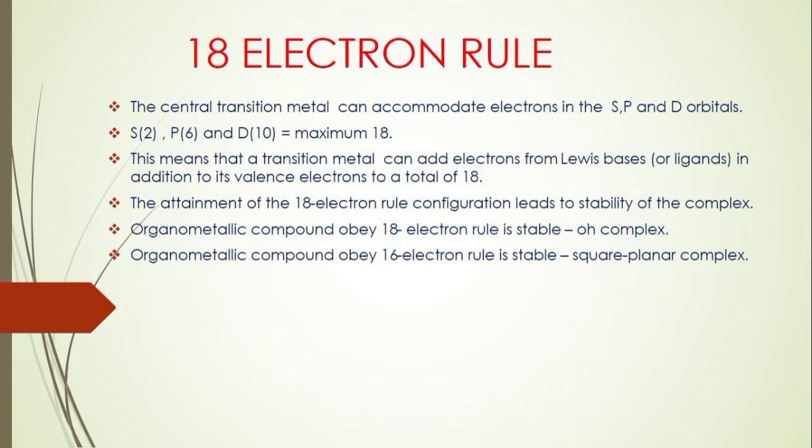The 18-electron rule describes the stability of organometallic compounds. The central transition metal atom can accommodate electrons in s, p, and d orbitals. The s orbital can accommodate 2 electrons, the p orbital can accommodate 6 electrons, and the d orbital can accommodate a maximum of 10 electrons, so totally it can accommodate 18 electrons in the outer shell.